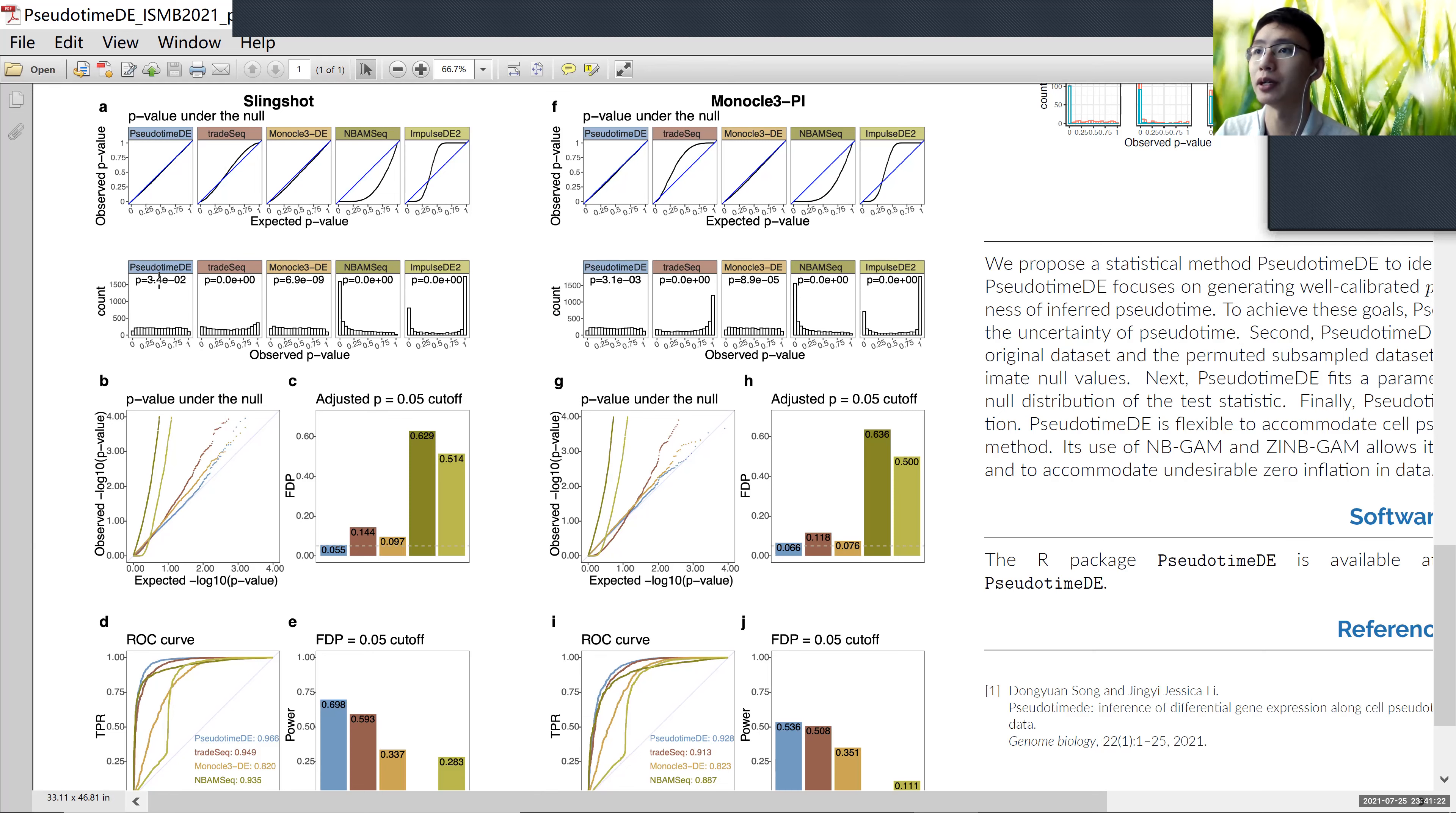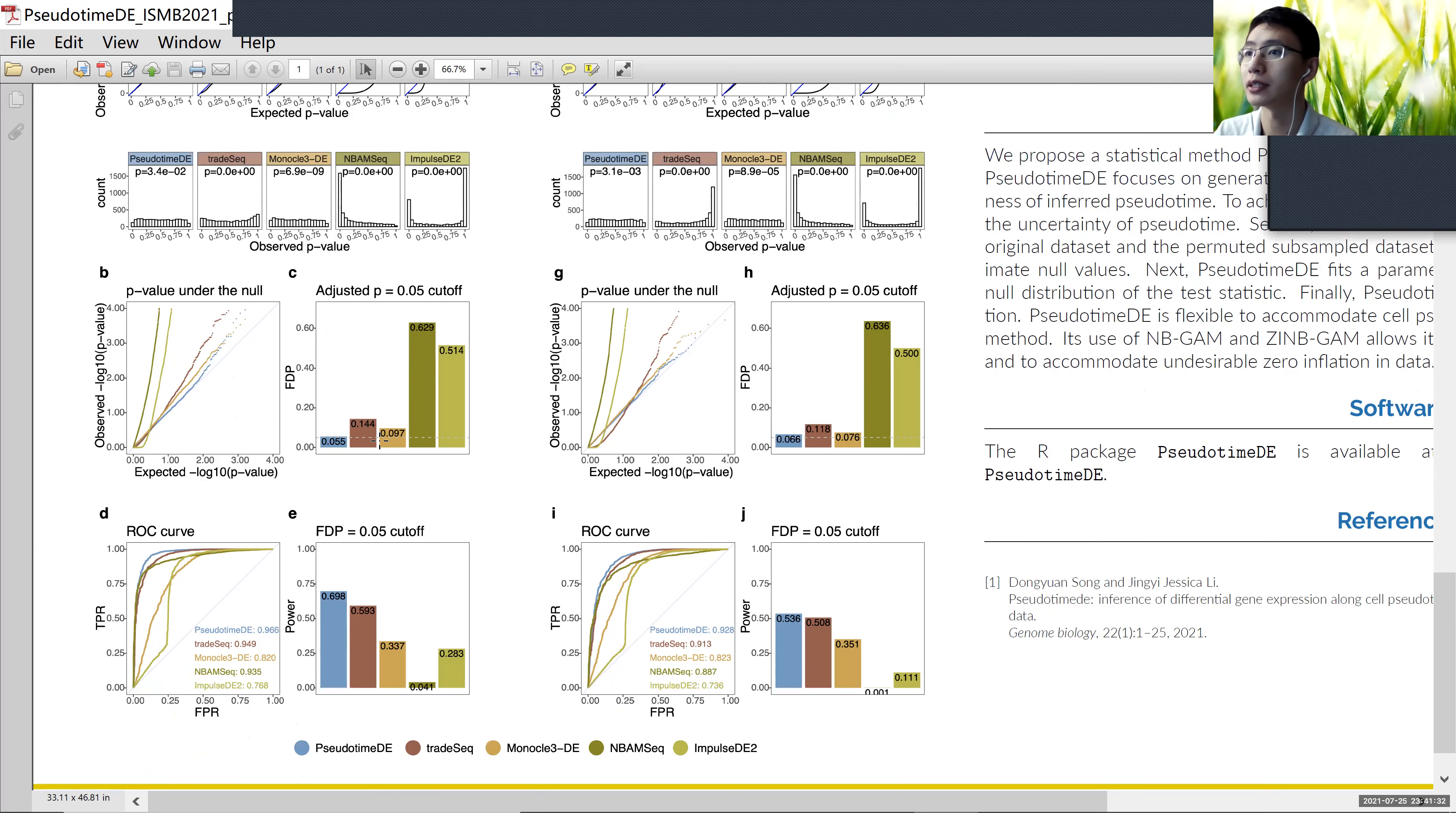We can see compared to all the other methods, only PseudotimeDE shows very uniformly distributed p-values under the null. And also we can see our method shows the best FDR control compared to other methods under the 0.05 nominal level, and also the highest power.